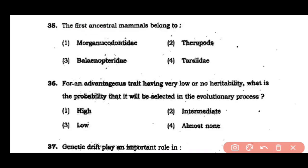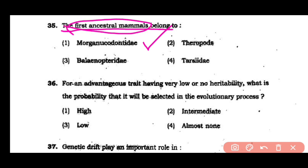Question number 35: The first ancestral mammals belong to Morganocodontidae, theropods, bellenopteridae, or Tarsiidae. The answer is option 1 — the first ancestral mammals belong to Morganocodontidae.